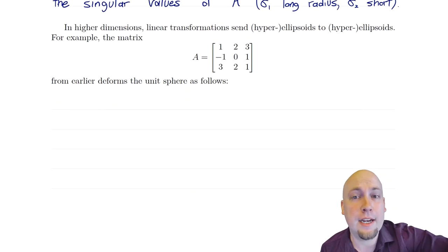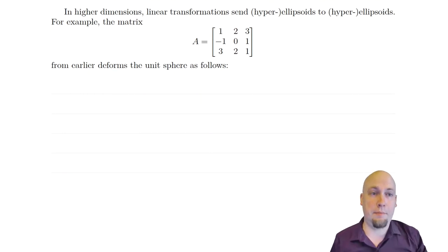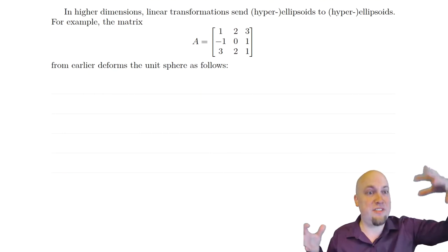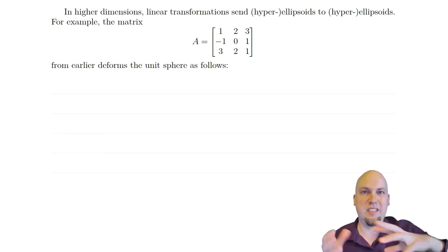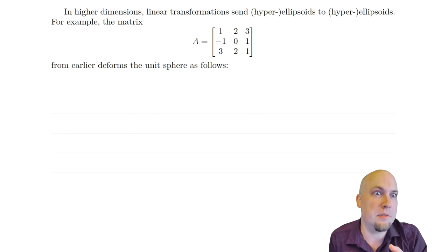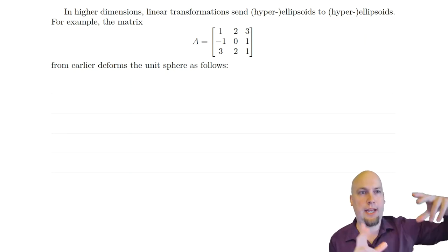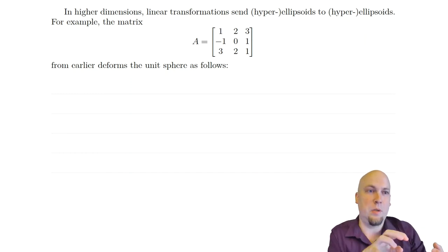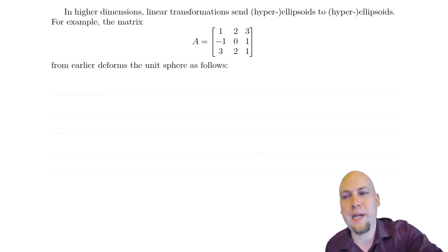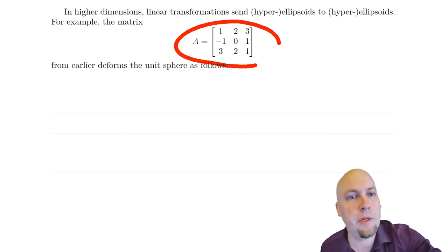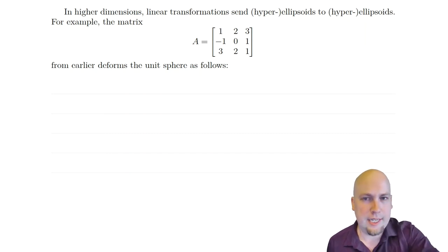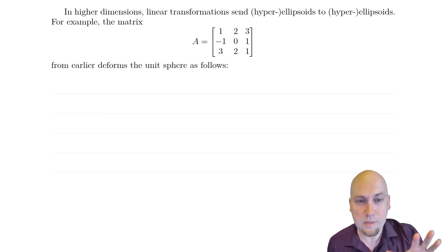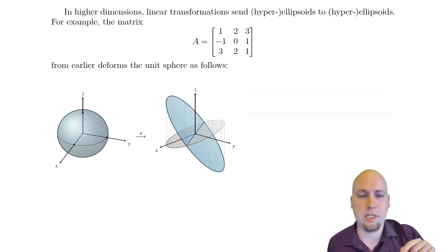In higher dimensions, something very similar happens — the same picture but beefed up a bit. Instead of sending the unit circle somewhere, now you're sending the unit sphere, or unit hypersphere, into an ellipsoid or hyperellipsoid. So let's go back to a specific matrix we already worked through and found the singular value decomposition of in the last lecture, and think about how it transforms the unit sphere.